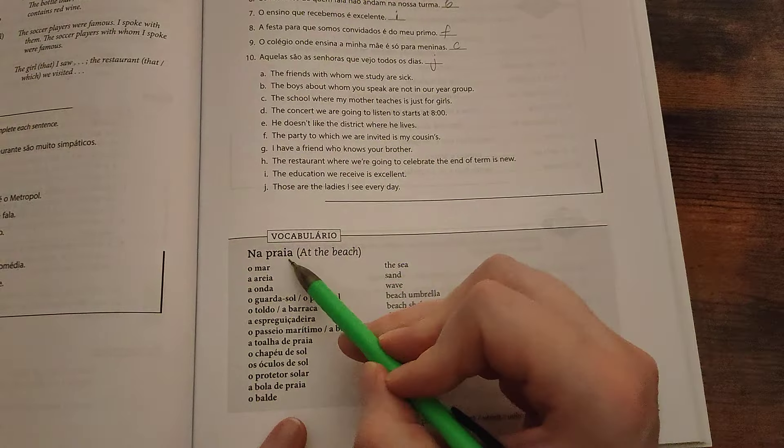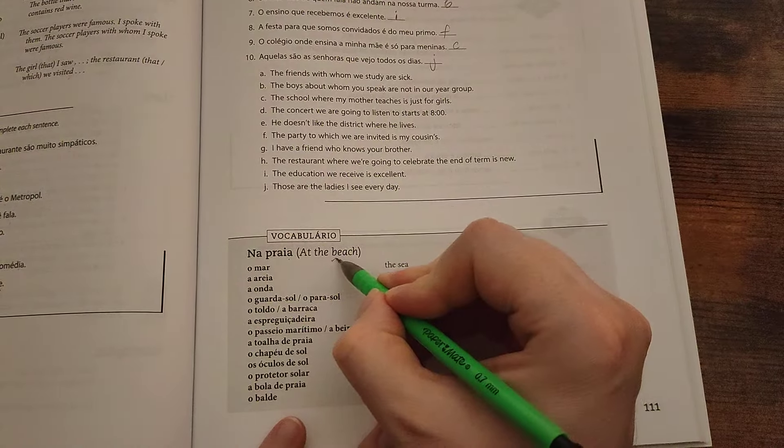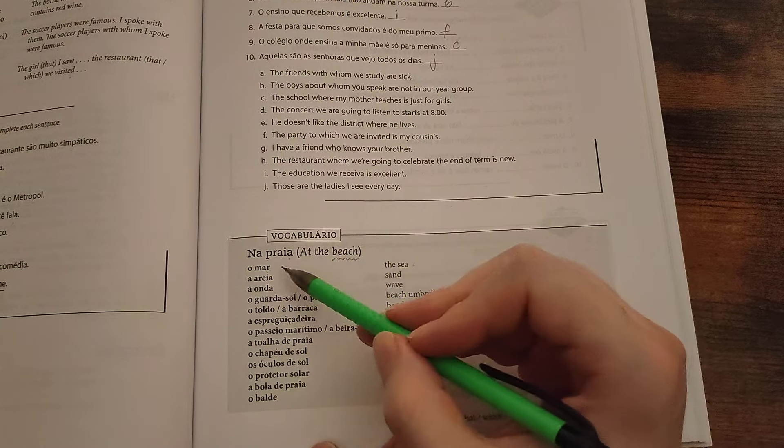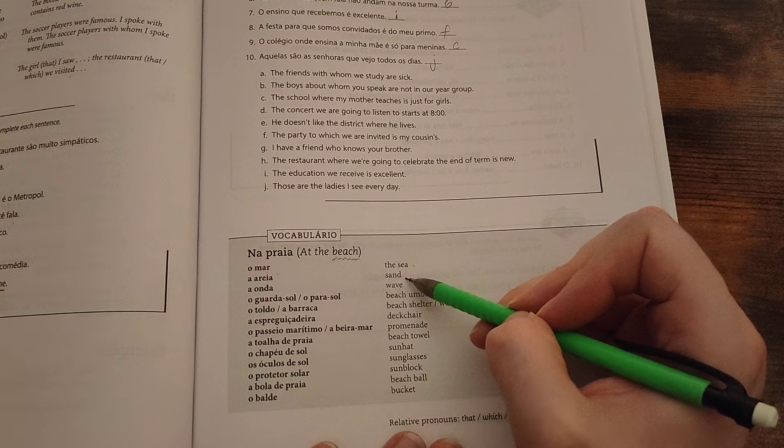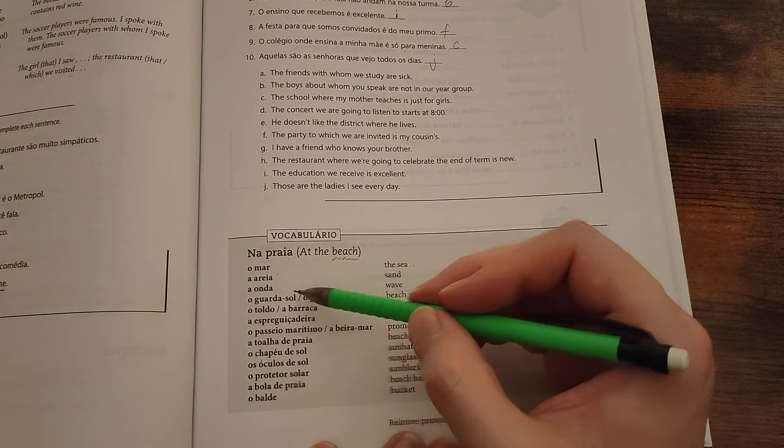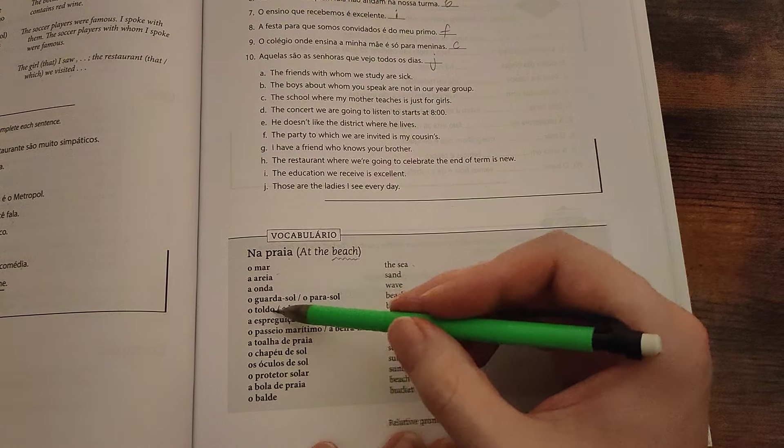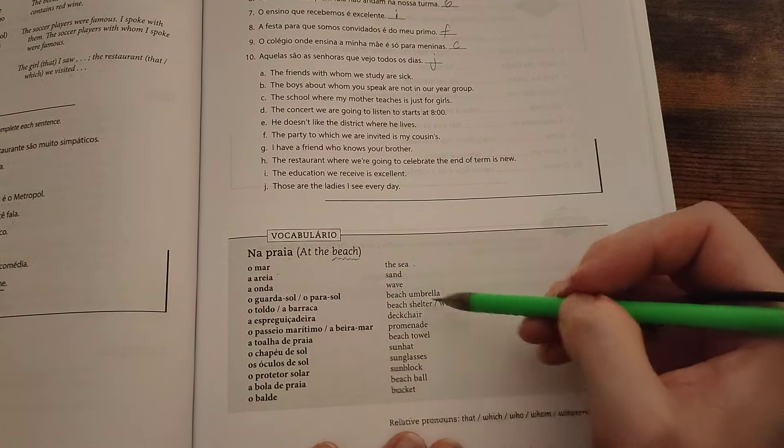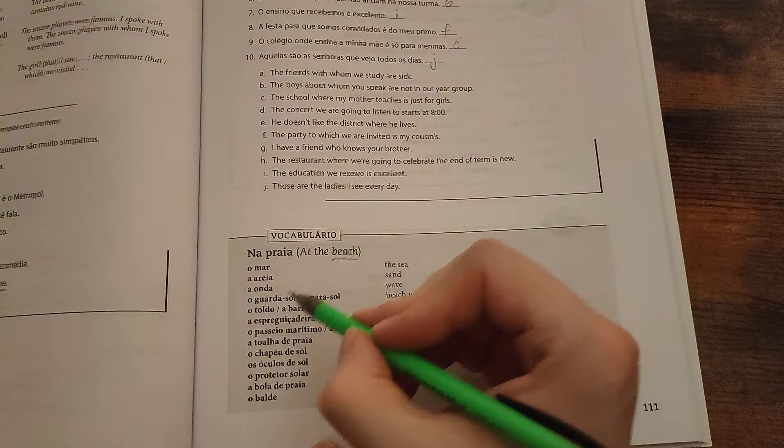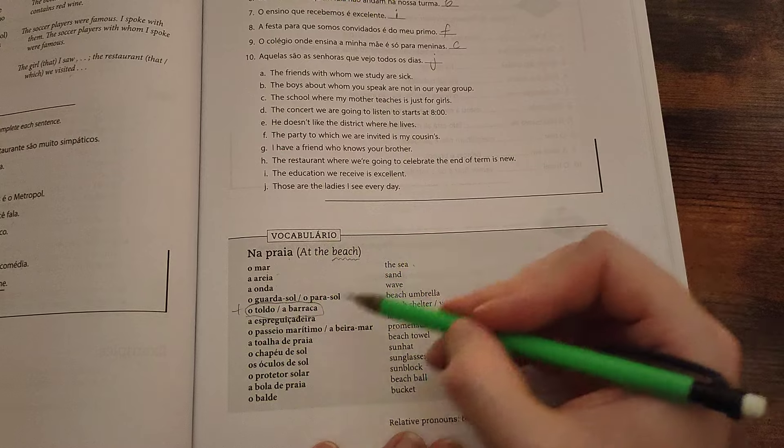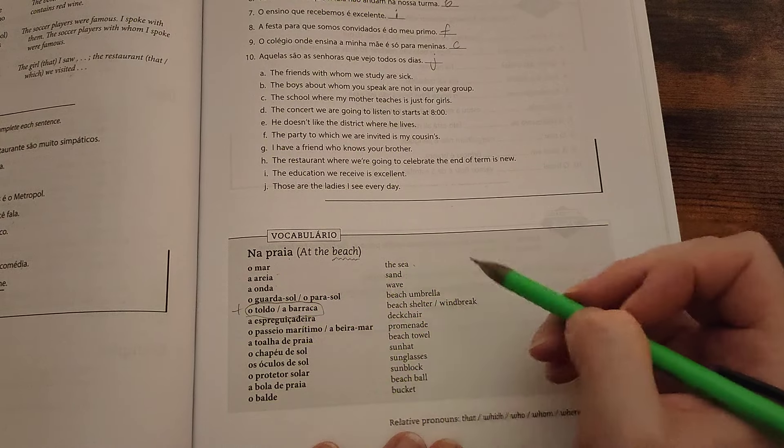Ok, o vocabulário novo na praia, at the beach. O mar, the sea. A areia, sand. A onda, wave. O guarda-sol, o parasol, beach umbrella. O toldo, a barraca, beach shelter, windbreak.